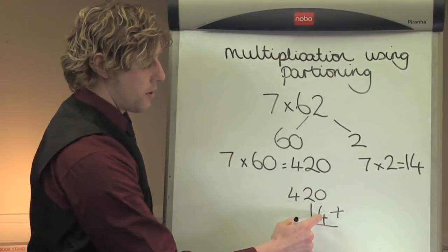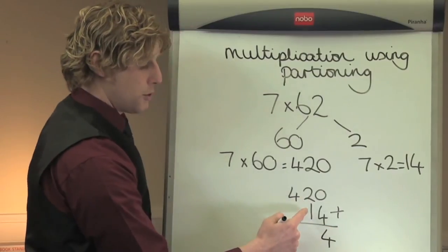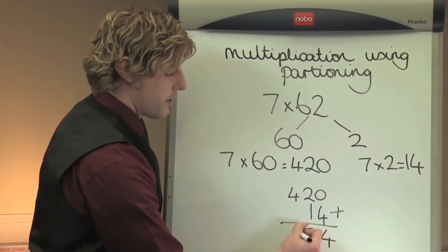I'll start with my units column. 0 plus 4 is 4. 2 plus 1 is 3. And 4 plus 0 is 4.